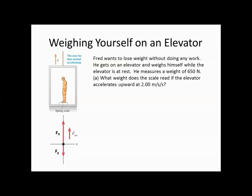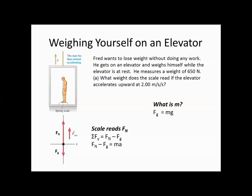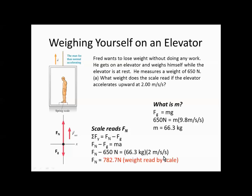First, what weight does the scale read if the elevator accelerates upward at 2 meters per second squared? We have the normal force and the force of gravity with an overall acceleration upward. The sum of forces in the y-direction is normal force minus gravity, equal to mass times acceleration. We find his mass using F sub g equals mg: mass is 66.3 kilograms. Plugging in, with acceleration of 2 meters per second squared upward, we get a normal force of 782.7 newtons — so he appears to weigh more when accelerating upward.